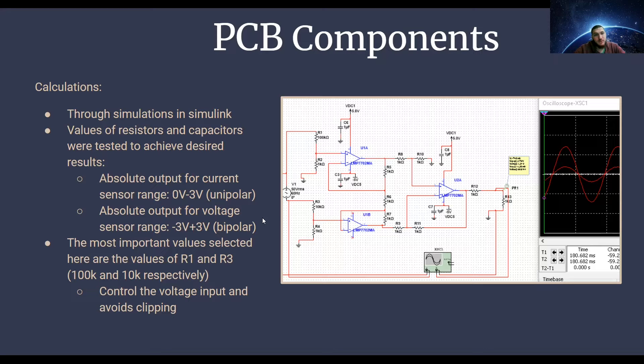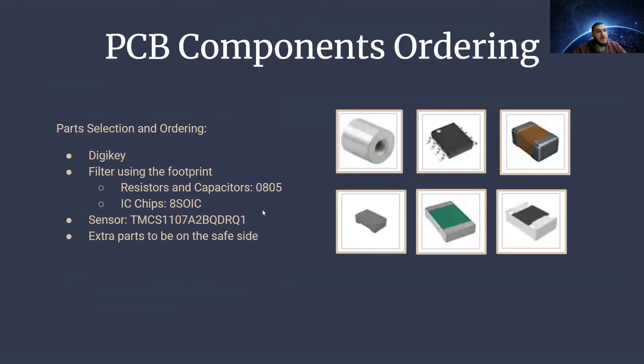After that, we ordered the parts on DigiKey. We used the footprints of 0805, which were given to us for the resistors and capacitors. The IC chips had the A-Soist footprint, and we had to order extra parts to be on the safe side.